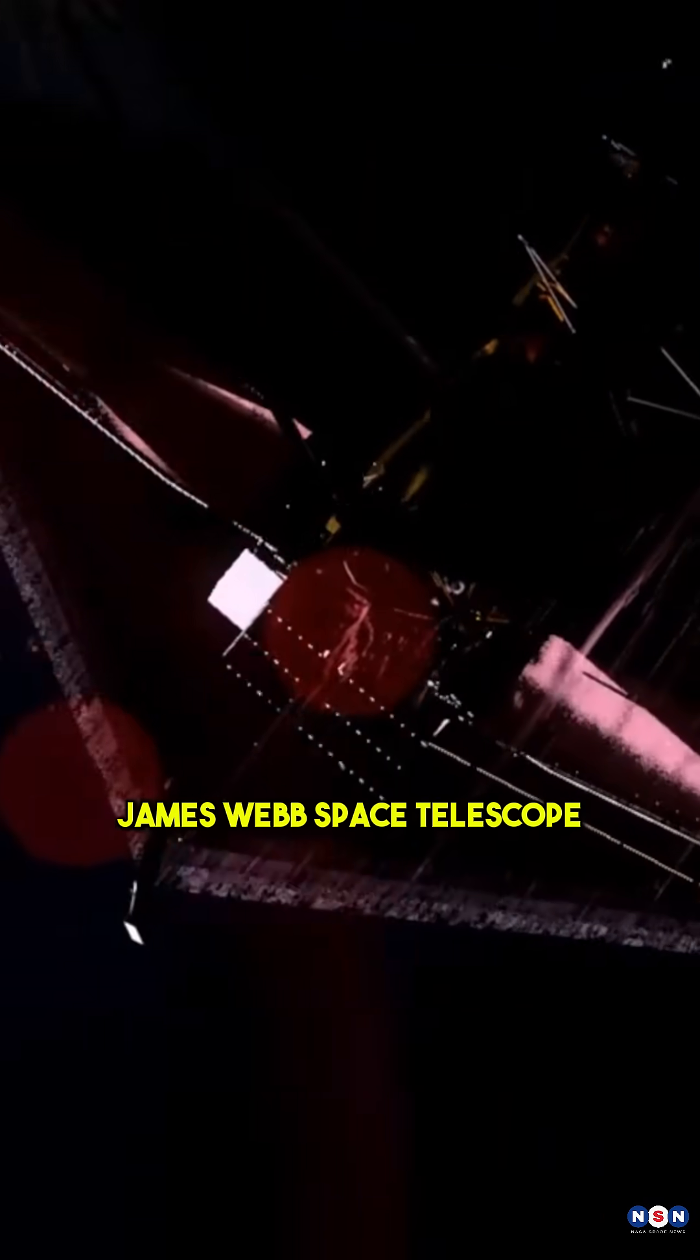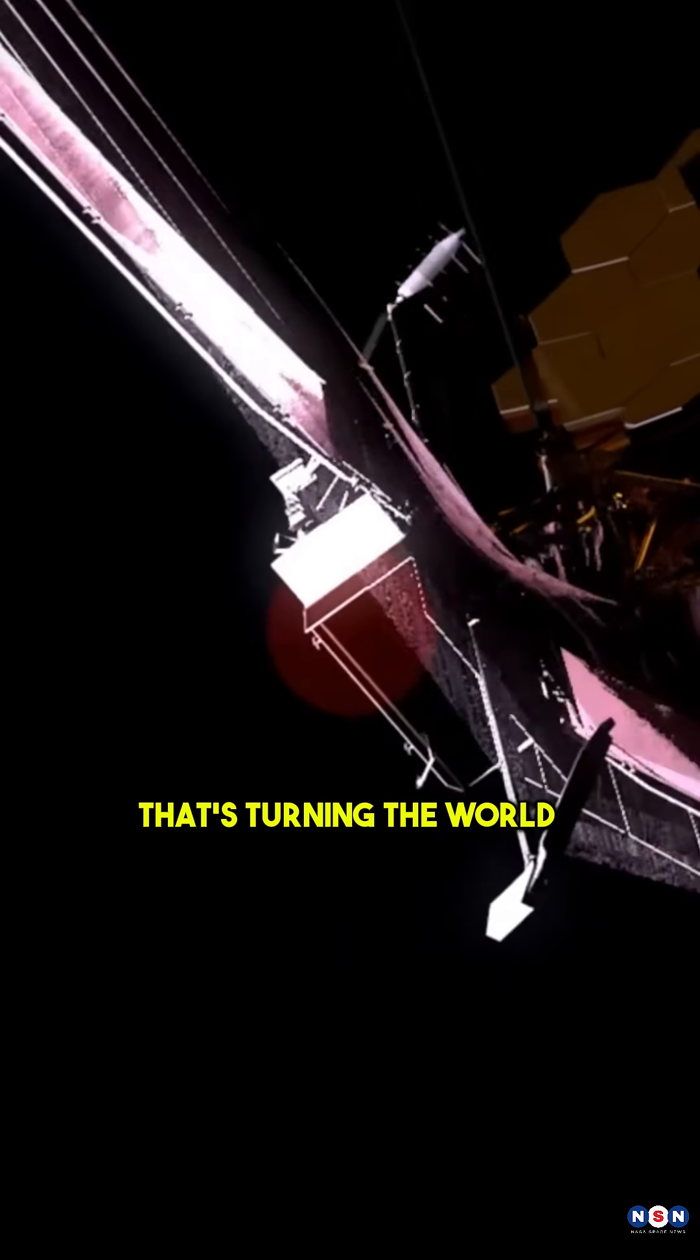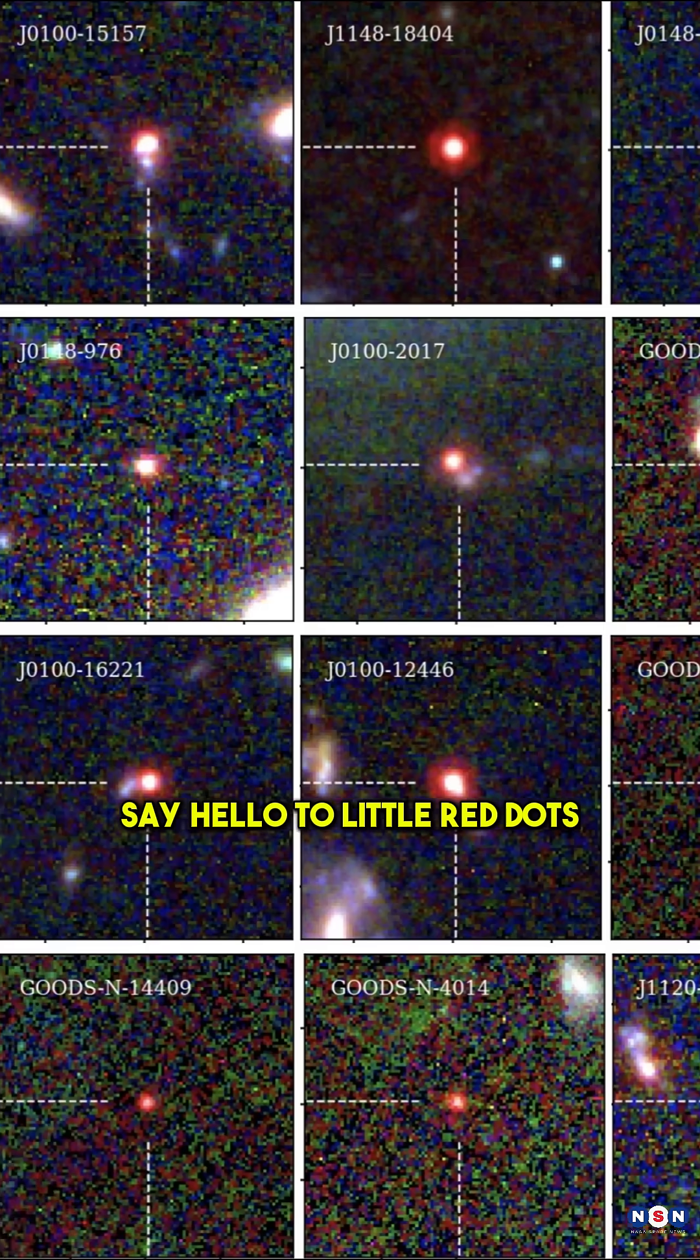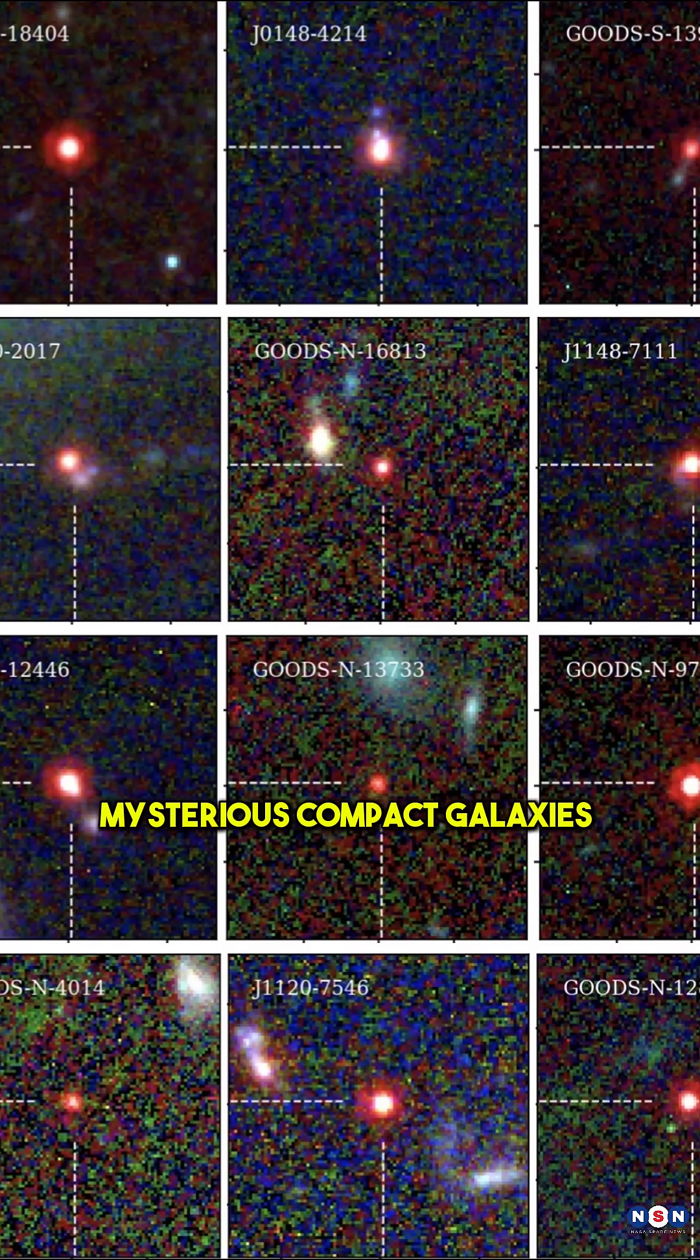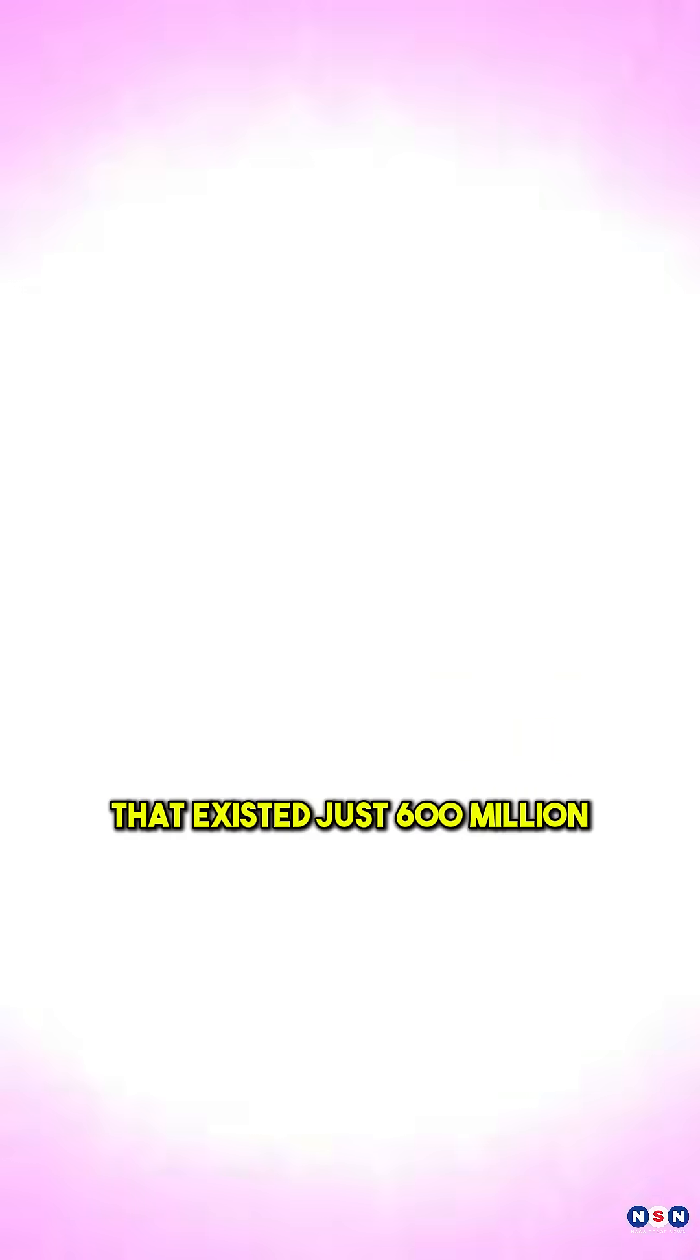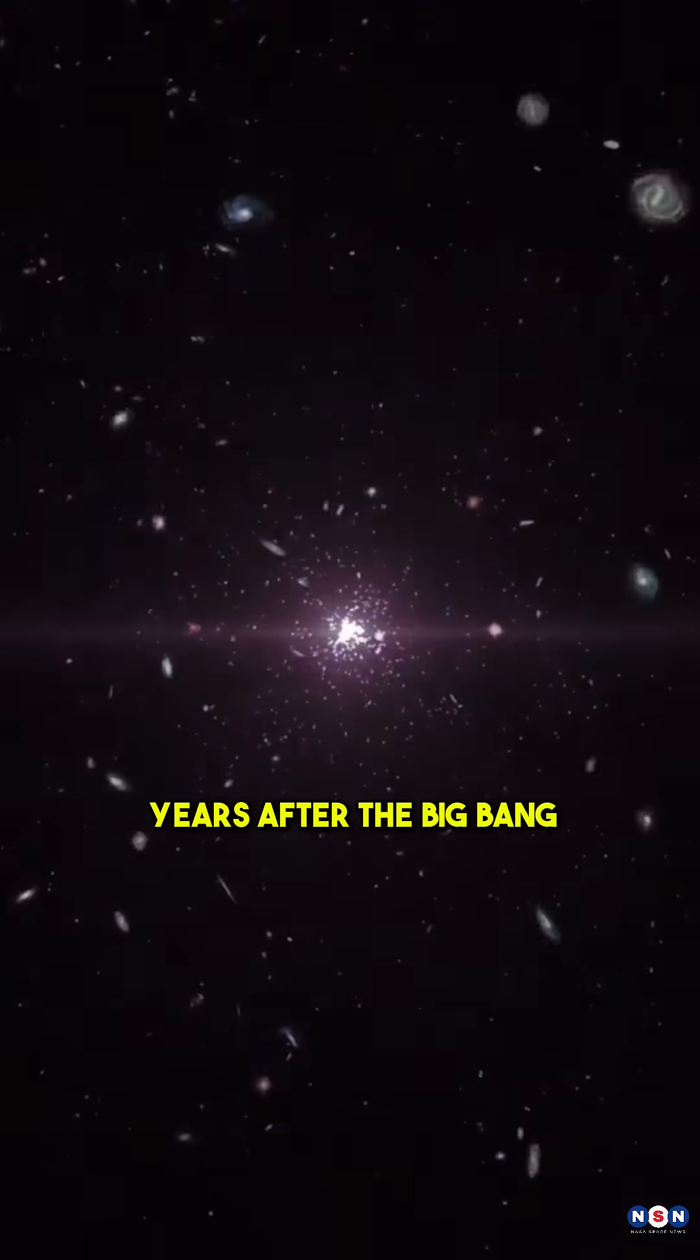Did you know the James Webb Space Telescope recently made a discovery that's turning the world of astronomy upside down? Say hello to little red dots, mysterious compact galaxies from the early universe that existed just 600 million years after the Big Bang.